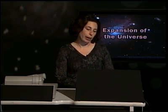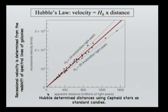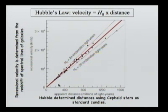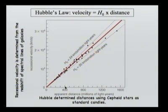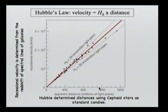And he made a plot, like this one. This plot shows the distance from us to galaxies and the velocity that these galaxies are moving away from us. A galaxy that's nearby is moving away from us at about 10,000 kilometers per second, while a galaxy that is further is moving much faster than that.